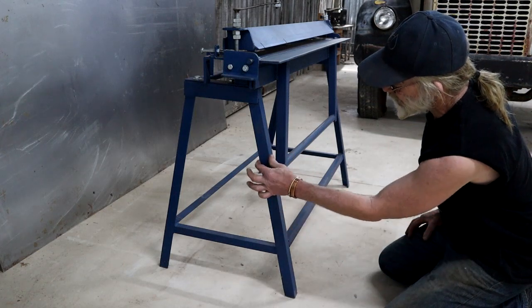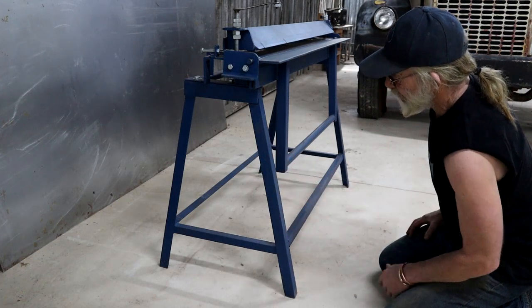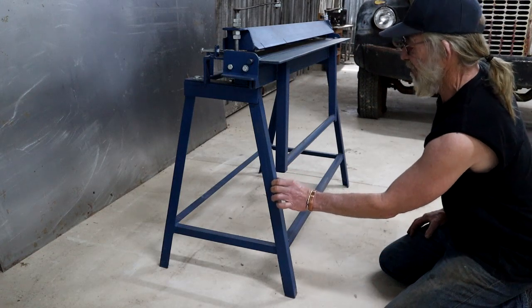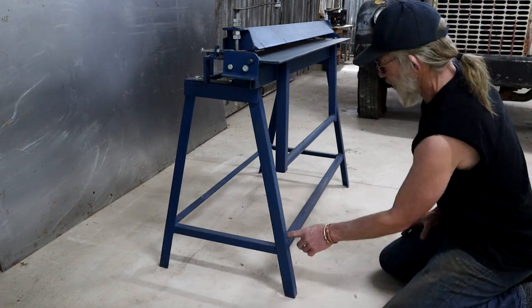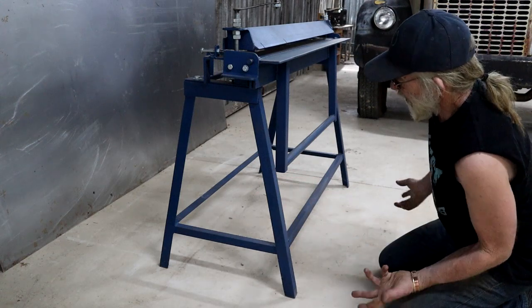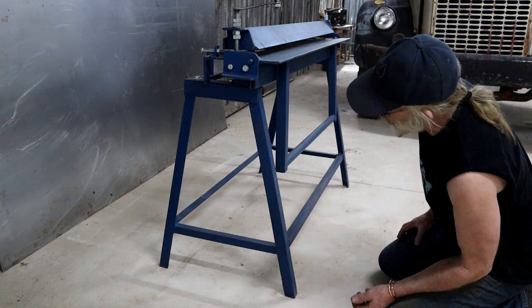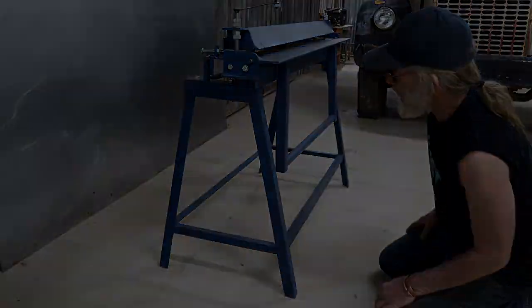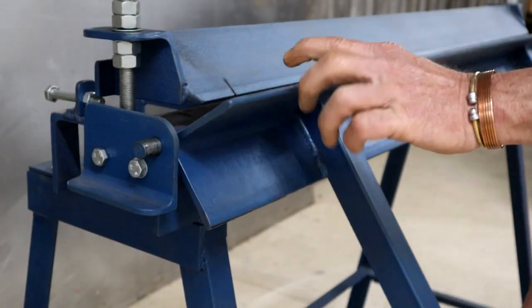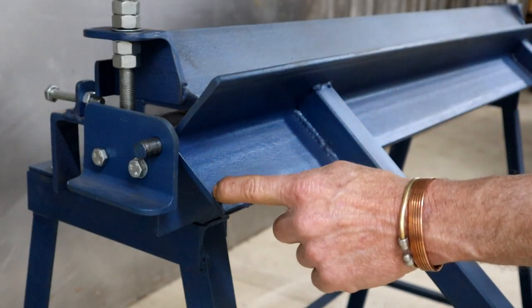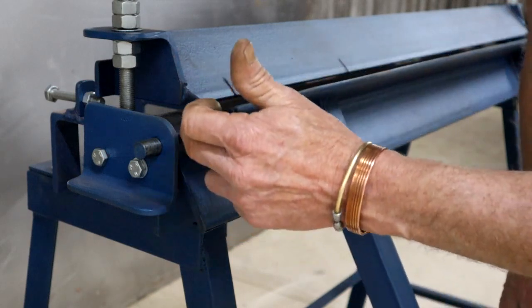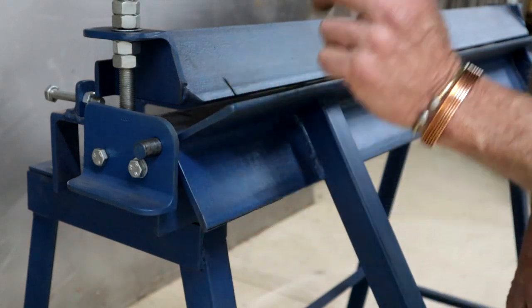This one is built from angle bar. This is about, what is this, inch and a half. One running across, it's one inch. You can make this from square tubing as well, whatever you have. The essence of this thing are three pieces of this angle bar. I'll show you now.